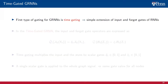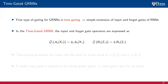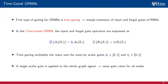The simplest type of gating in GRNNs is time gating, which is just an extension of the input and forget gates we discussed for RNNs. In the time gated GRNN, the input gate operator q-hat(t) is parameterized by a scalar q-hat(t), and these scalars multiply the filtered output and the filtered state respectively, both taking values in the 0-1 interval. In time gating, a single scalar gate is applied to the whole graph signal — the same gate value is applied to the signal components at all nodes. The input gate either attenuates the input or lets it all pass; similarly, the forget gate either attenuates the previous state or lets it all pass in the computation of the next state.